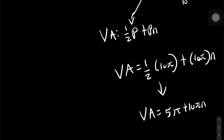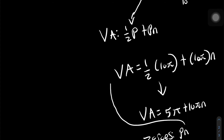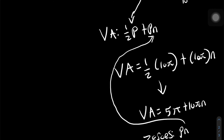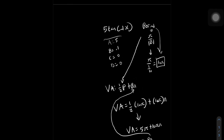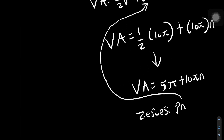Now that we know our vertical asymptote, the next thing to do is to find the zeros. The zeros of a tan is equal to Pn, which looks really similar to the second part of our vertical asymptote base formula. So the zeros of the equation 5 tan of 0.1x is actually just 10 pi n. This is the zero.